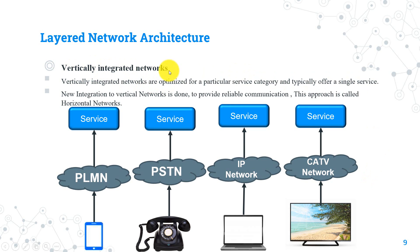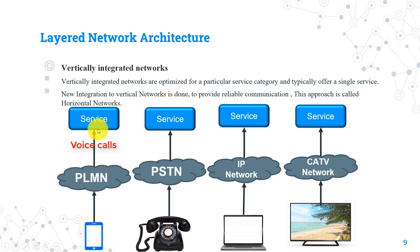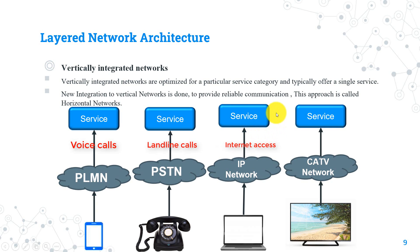Vertically integrated networks are optimized for a particular service category and usually offer a single service. For example, PLMN in vertical networks was designed to make a single service which is voice calls. PSTN, public switched telephone networks, was designed to make landline calls. IP networks were designed to provide interface with the internet, and so on. Each of these networks has its own connectivity nodes, control nodes, and application services nodes.